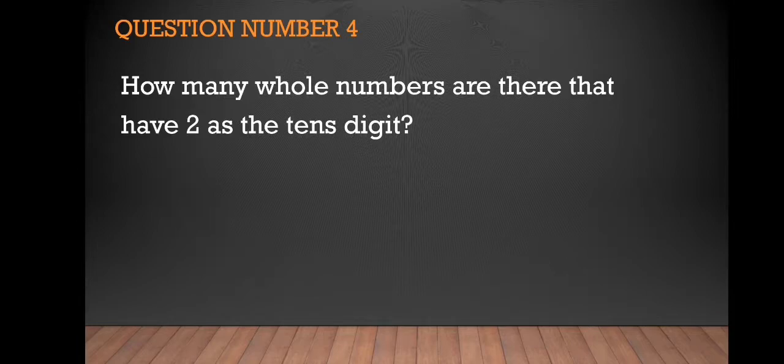But we know that from 20 to 30 we have 10 numbers. However, 30 is not included because it has 3 tens, but in its place we have 20 because 20 has 2 tens. That means we include it, so it's the same thing, still 10 numbers.